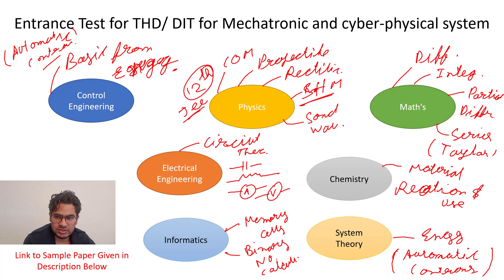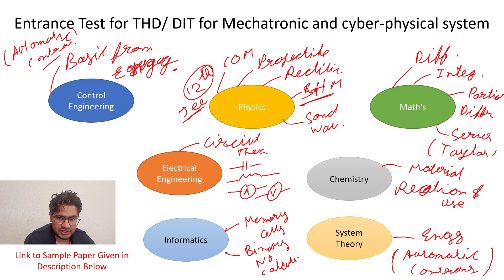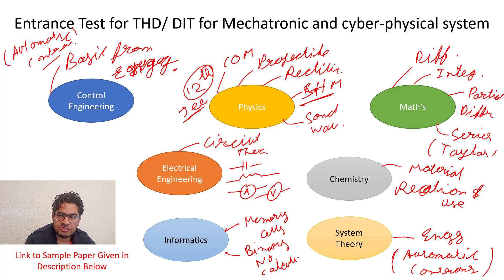The Chemistry part is very small — only one or two questions about materials, like which material should be used for a specific application. For example, in my paper there was a question about what material should be used for antennas so that it will not get oxidized or its range will not be reduced. I guess only two questions were there — one from materials and another from the periodic table.